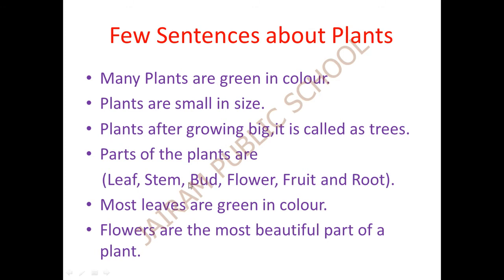Once again we can see the parts of the plant. Parts of the plants: first one is leaf - L-E-A-F, leaf. Next S-T-E-M, stem. B-U-D, bud. Next is flower - F-L-O-W-E-R, the most beautiful part of the plant. F-R-U-I-T, fruit. And the last one is root - R-O-O-T. It is planted under the soil. These are the parts of the plant: leaf, stem, bud, flower, fruit, and root - six parts of the plant.